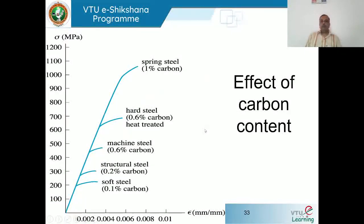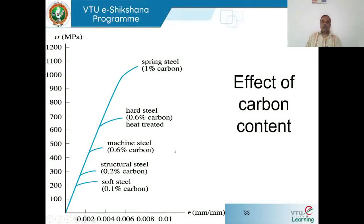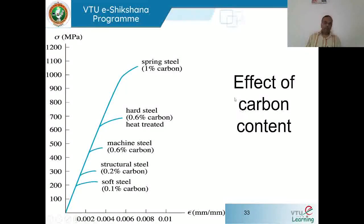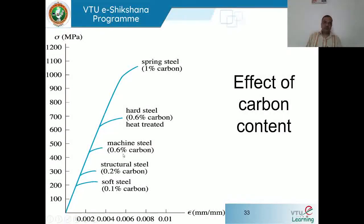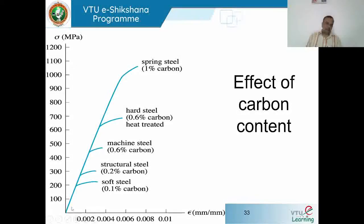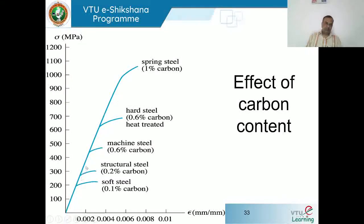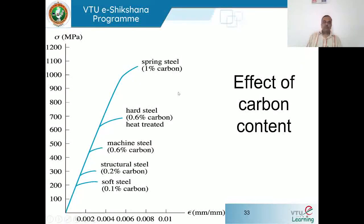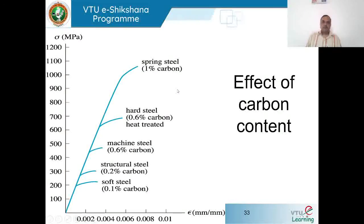As carbon content increases, both ultimate strength and yield strength of steel increase. The initial slope of the stress-strain diagram remains constant because the modulus of elasticity is constant for any type of steel. Carbon contents of 0.1%, 0.2%, 0.6% and higher each produce progressively stronger steels, but the initial linear region has the same slope. Non-linearity begins at different points depending on the type and carbon content of the steel.